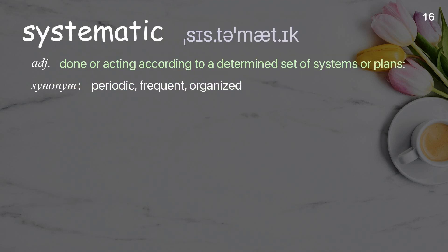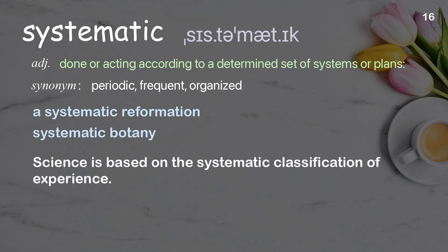Systematic: done or acting according to a determined set of systems or plans. Examples: a systematic reformation, systematic botany. Science is based on the systematic classification of experience.